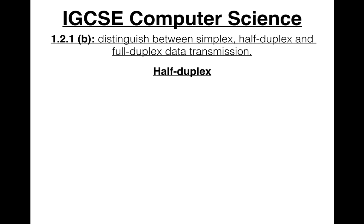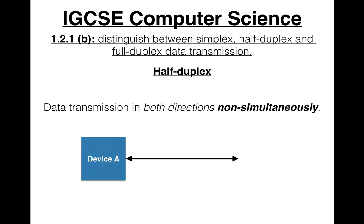Then there's half-duplex. Half-duplex is data transmission in both directions but non-simultaneously, not at the same time. Here's how it should look. What I'm trying to say here is both directions non-simultaneously. Device A can send data to device B, and device B can send data to device A, but not at the same time.